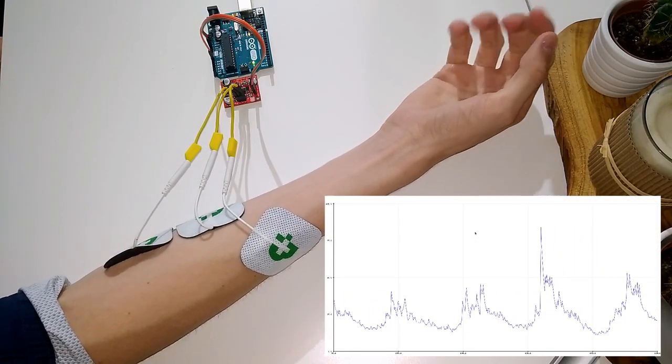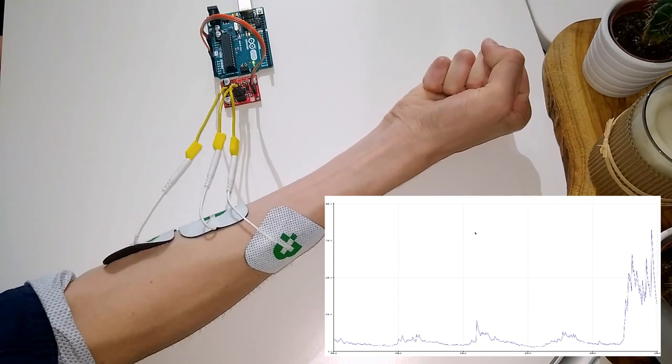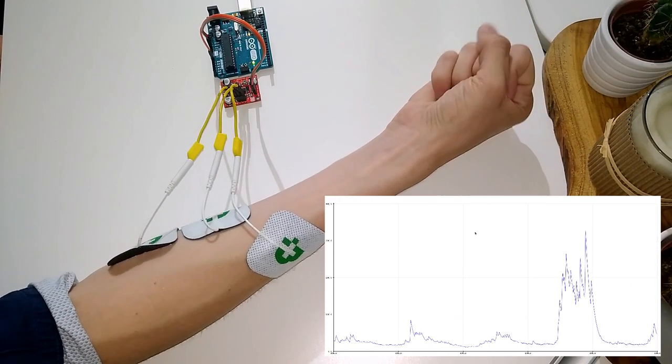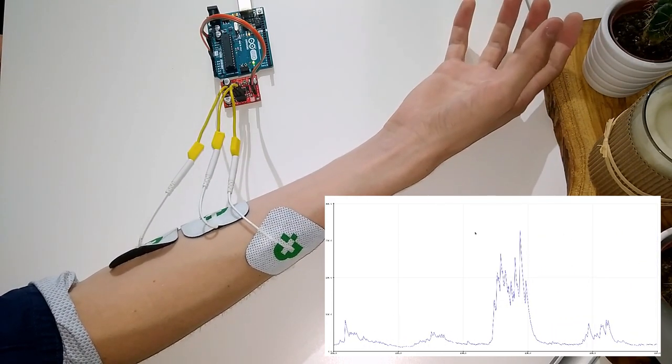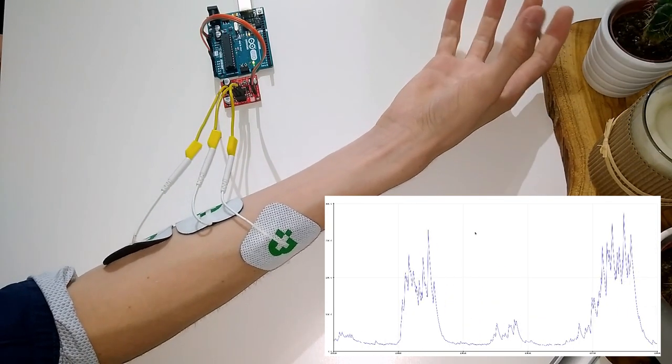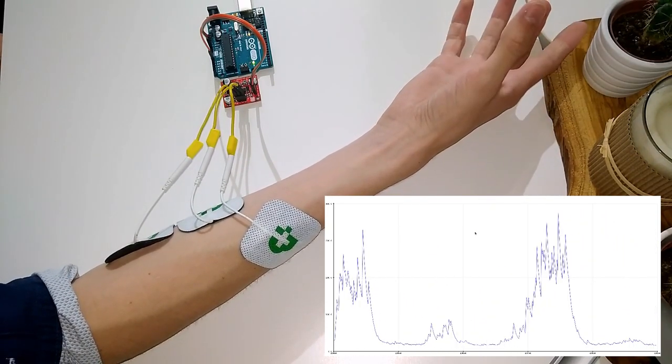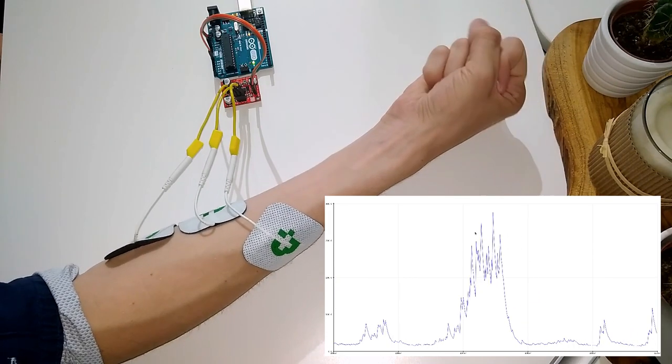The voltage is proportional to the muscle activity. A potentiometer can be used to set the sensitivity, which also depends on the placement of the electrodes.